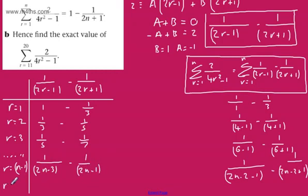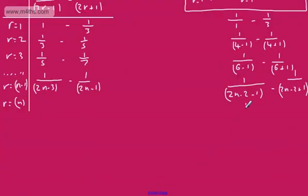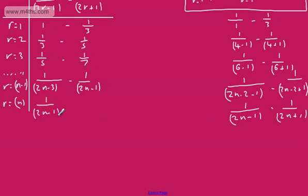And our final term, when r equals n, we get 1 over 2n minus 1, and then finally minus 1 over 2n plus 1. So we can feed those in at the bottom of the table: 1 over 2n minus 1 minus 1 over 2n plus 1.